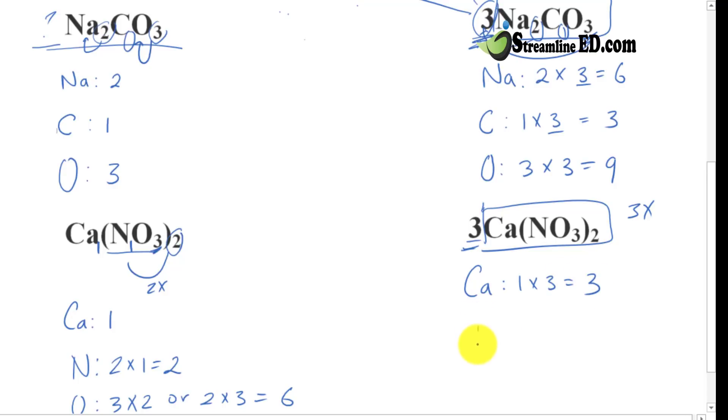And then, for nitrogen, notice how we have 1 nitrogen here, and there's 2 of it. So, we have 1 times 2, but there are 3 of them, so we have to multiply by 3, give us a total of 6. You see how that works? See right here? 2 for each one of them, and if we multiply by 3, that gives us 6, which is what we have here.